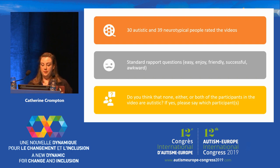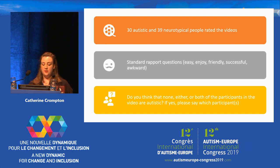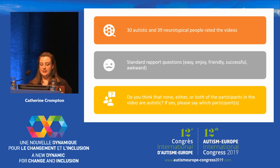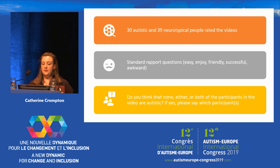Our raters watched each video and scored the interaction between the two people using the same rapport questions as before: how easy, enjoyable, friendly, successful, and awkward they thought the interactions were. Once again, these five measures had a high Cronbach's alpha and were summed to create a single measure of interactional rapport for subsequent analysis. We also asked raters whether they thought that anyone in the video was autistic, and if so, who.